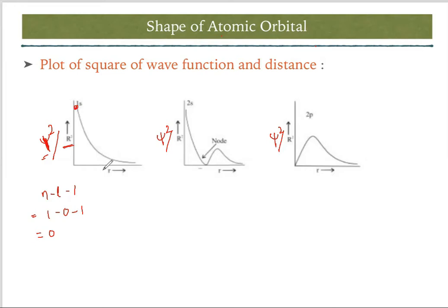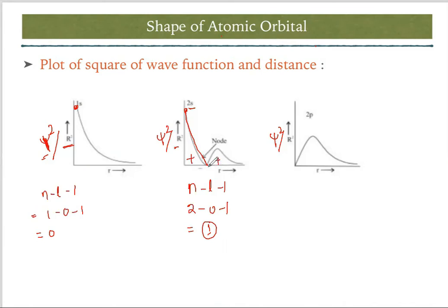For 2s with ψ² on the y-axis, nodes = n − l − 1 = 1. The graph starts from a higher point and comes down. The key difference from the ψ graph is that since this is ψ², all negative lobes become positive lobes. So the graph goes down, then goes back up as a positive lobe, and meets at infinity.